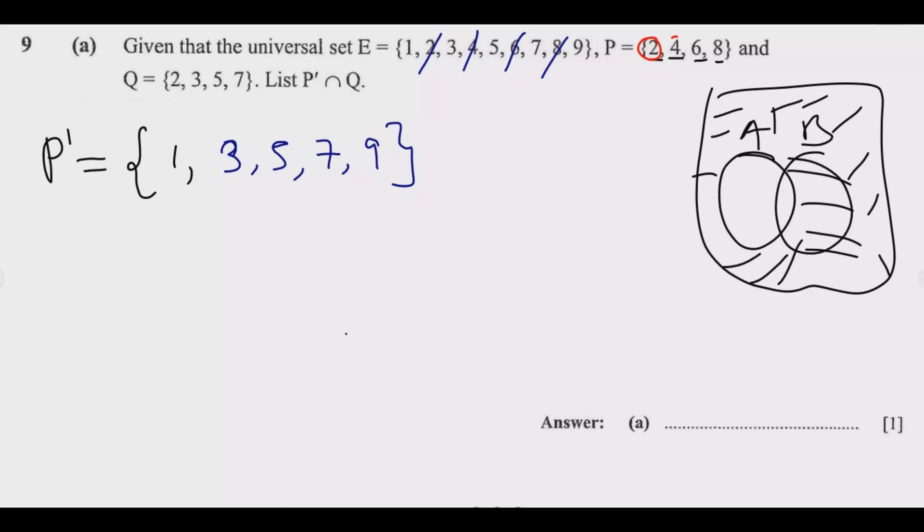When finding a complement of a set, just see what is in that set, then remove them from the universal set. What remains is the complement. Then we look for Q—Q is {2, 3, 5, 7}. It's easier to list them next to each other. Then let us look for the elements that are found in both of these sets, which is the intersection. Intersection is anything that is found in these two sets. What is common? There is 3, there is 5, there is 7.